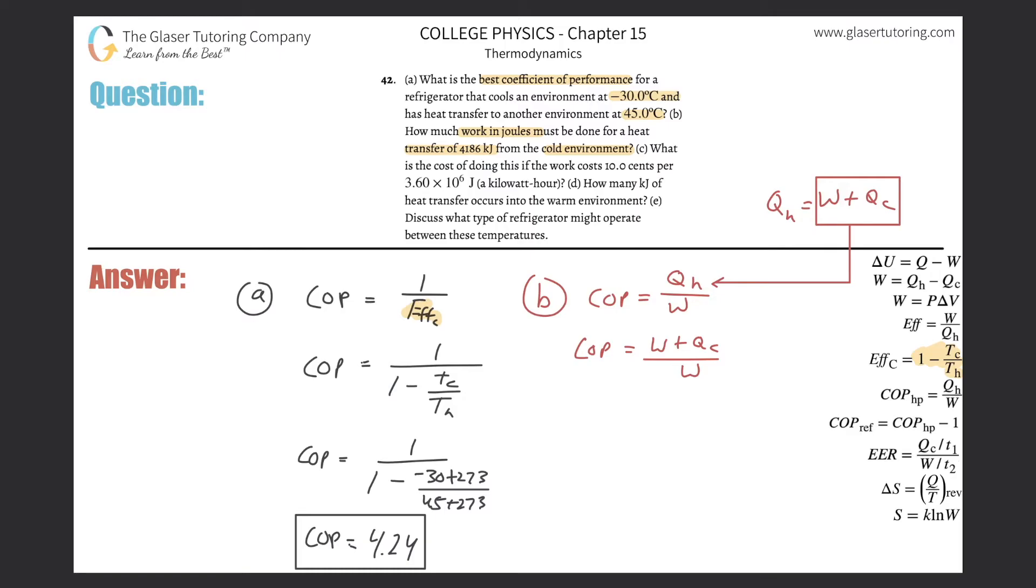Let's cross multiply the work first. So it's going to be coefficient of performance multiplied by the work will equal the work plus the Q sub C. Why don't we get like terms on the same side? So I'm going to subtract the work on over to the left. So this is coefficient of performance times the work minus the work is equal to Q sub C. These two things have a common factor of work in them. So I can factor that out, meaning this would then become coefficient of performance minus one. That's equal to Q sub C. And then I can divide this on out. So I realize that the work here is going to be equal to Q sub C divided by coefficient of performance minus one. And here you go.